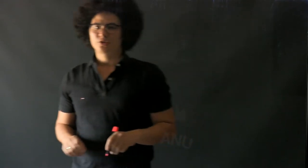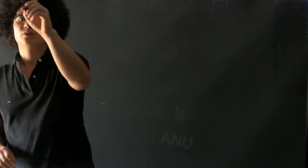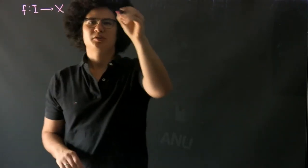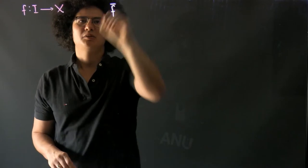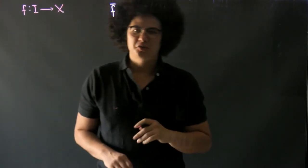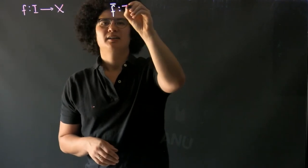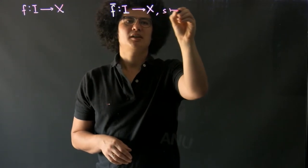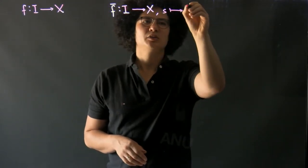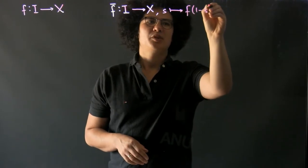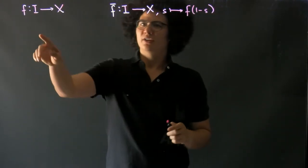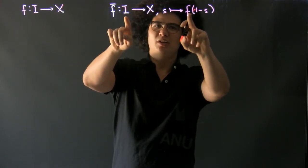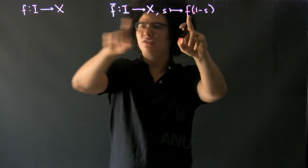I want to show that we have some notion of inverse path. So if we have some path in our space, I'm going to define the inverse path, which I will denote as f-bar (so as not to confuse it with pre-image). It is also a path in x, except it takes a point in the interval to f applied to 1 minus that point in the interval.